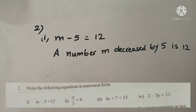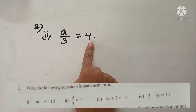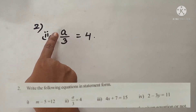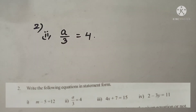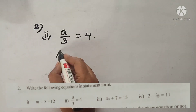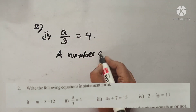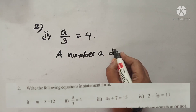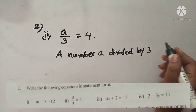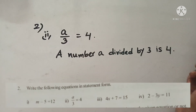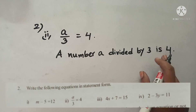Now let's see question number 2: a divided by 3 is equal to 4. Here the number is A, divided by 3 and we are getting the answer 4. The mathematical statement is: a number A divided by 3 is 4.